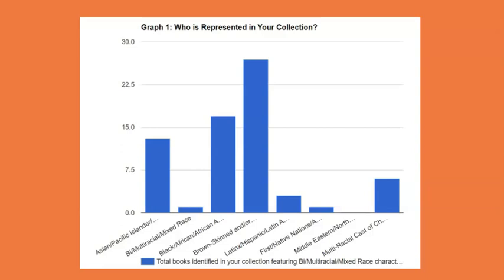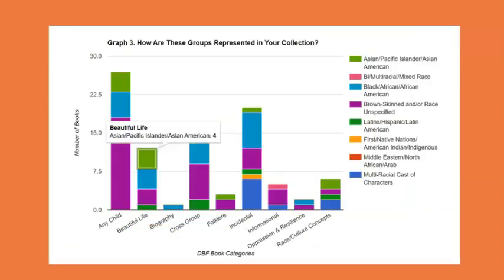Diverse Book Finder focuses quite heavily on multicultural representation, which you can see along the bottom of this chart where it lists who is represented in the children's collection. This chart is actually from a real audit of a smaller library in Wisconsin, and you can see how many books were found with each multicultural element. The report also shows how your collection compares by cross-referencing the multicultural elements against character representation elements. This helps give some significance to the quality and depth of the diversity in your books, going a little deeper than just skin tone or color.